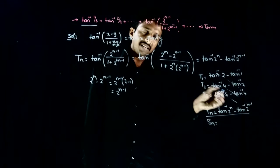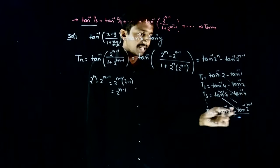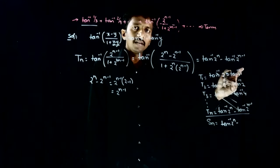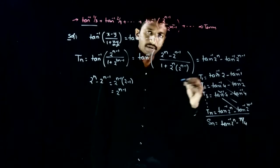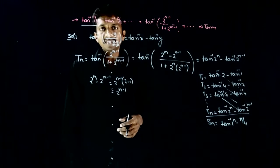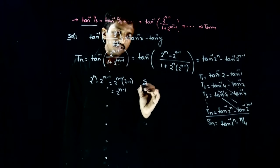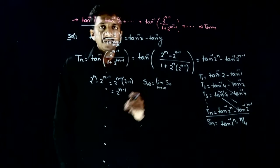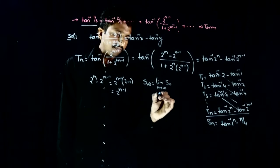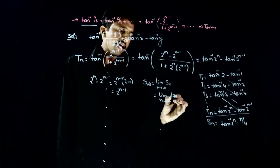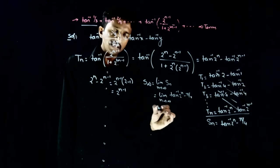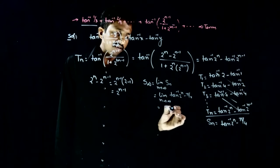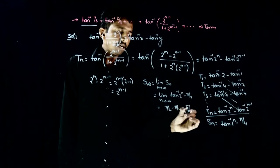As we continue, each term gets cancelled with the previous one. What remains is tan inverse of 2^n minus tan inverse of 1, which is pi/4. So this is the sum of n terms of the sequence. Now we need the sum up to infinity. S∞ = limit as n tends to infinity of Sₙ = limit n→∞ of [tan inverse of 2^n minus pi/4]. As n goes to infinity, 2^n also goes to infinity, and tan inverse of infinity equals pi/2. So S∞ = pi/2 minus pi/4 = pi/4.